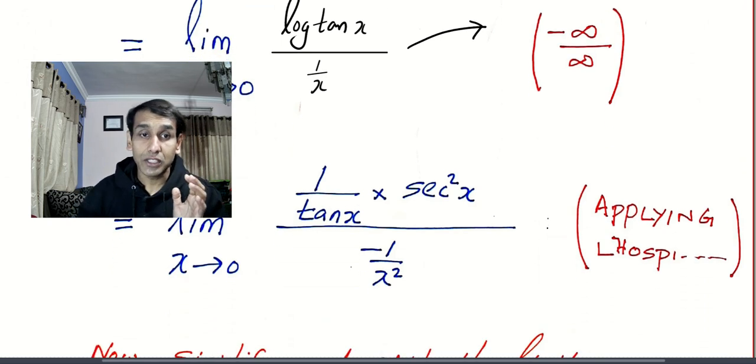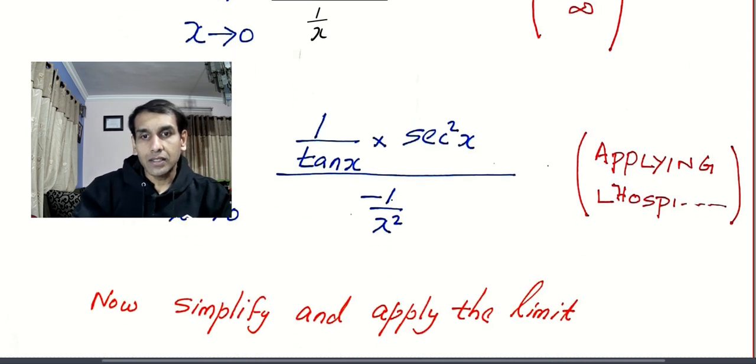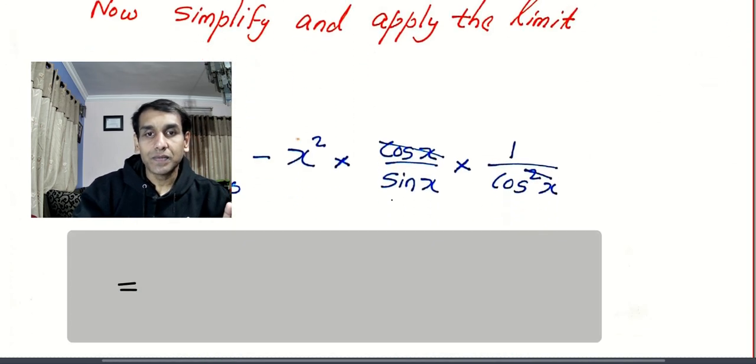But I don't want to make my problem complicated. So what I am going to do is I am going to write this as log tan x the whole divided by 1 by x. Now I am a little bit comforted because now I will be able to apply L'Hôpital's rule. Why? Because it is infinity by infinity. I did my differentiation.